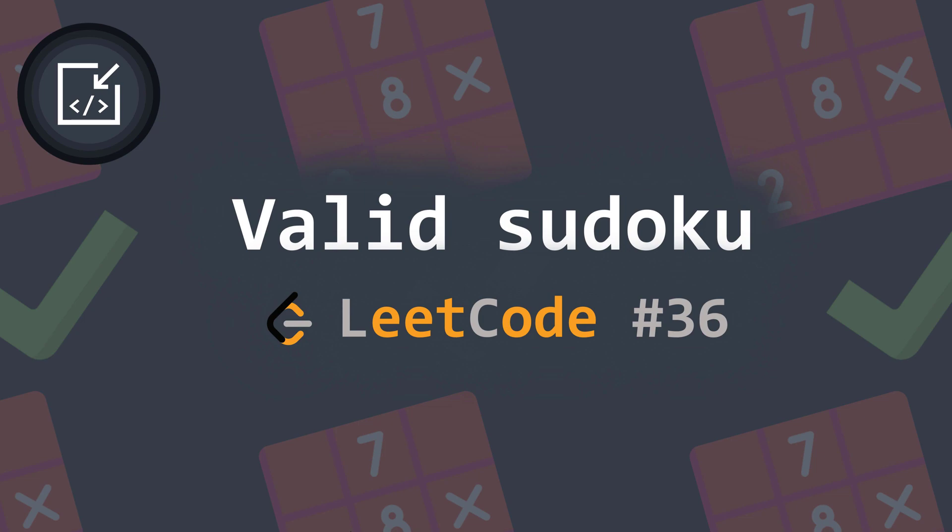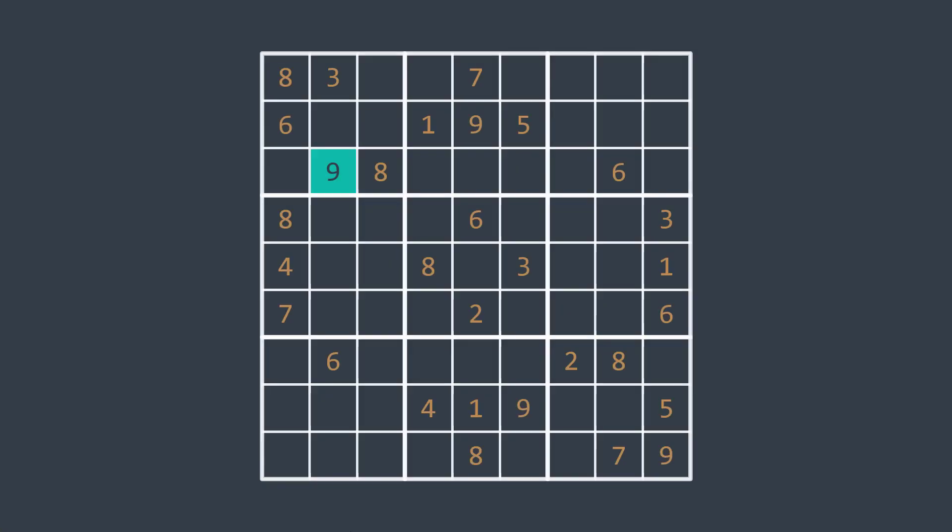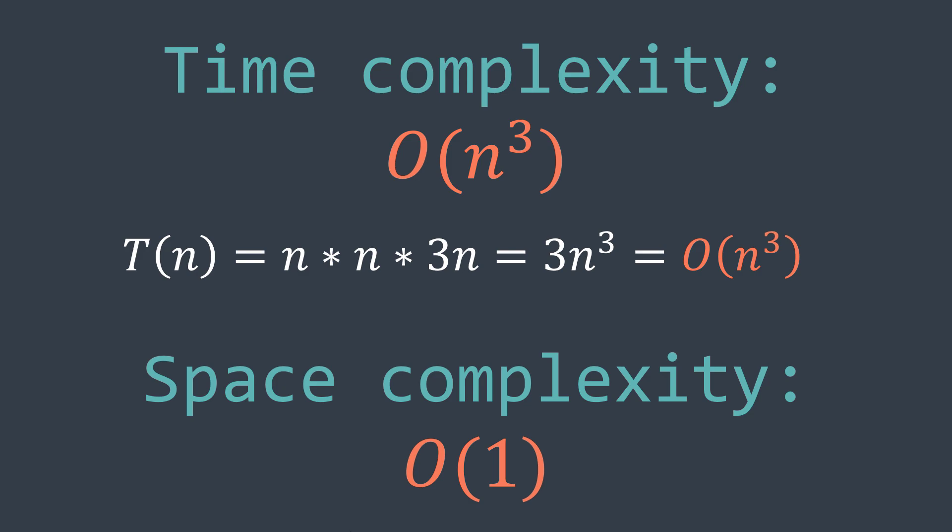The brute force solution is that for each cell that contains a number, for example, the one in blue green, we traverse its row, column and square to check that there is no cell that contains the same value. But this solution has an O(n³) time complexity, where n is the size of the grid. Because we have n rows times n columns times 3n to check a cell's unicity, for the row, for the column, and for the square.